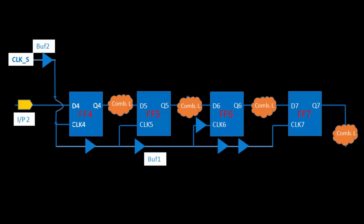Hello everyone. So till now we have discussed about the skew — how the skew behaves in terms of setup and hold violations. If we decrease the skew, there are chances of setup violation. If we increase the skew, there are chances of hold violation. We have also discussed that if the skew is greater than the data path delay — clock to Q and Q to D6 delay — the circuit is functioning wrong.